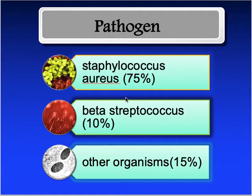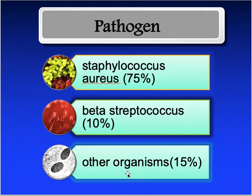Osteomyelitis is inflammation of the bone, usually as a result of infection which involves both the local bone tissue and the surrounding marrow. When the infection is in the subperiosteal space we call it periostitis. Remember that Staphylococcus aureus is the most common organism — beta Staphylococcus and other organisms can also cause it — because staphylococcal organisms have the ability to infect bone.